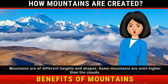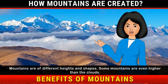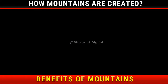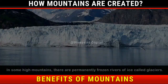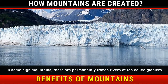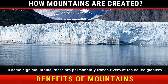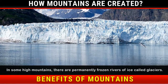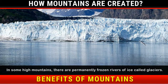Some mountains are even higher than the clouds. As you go higher, the climate becomes colder. In some high mountains, there are permanently frozen rivers of ice called glaciers.